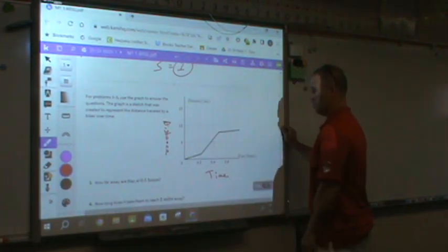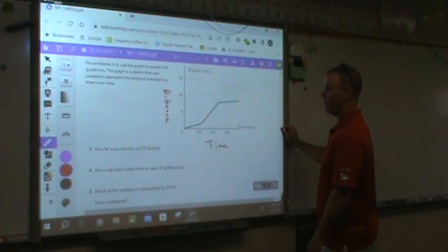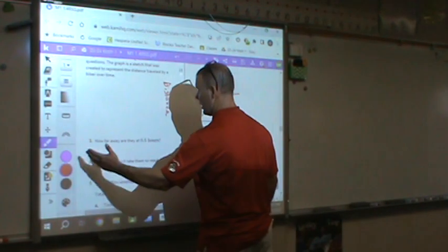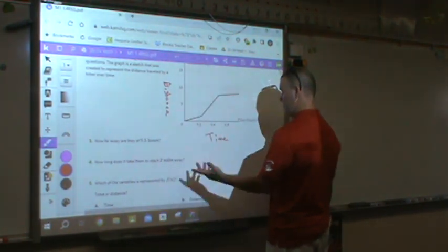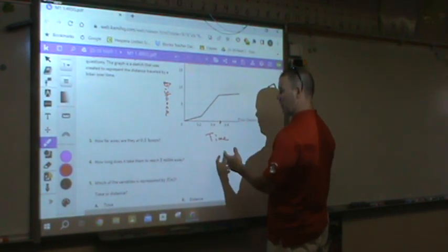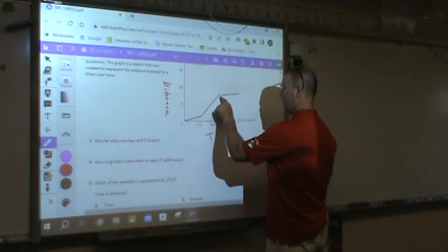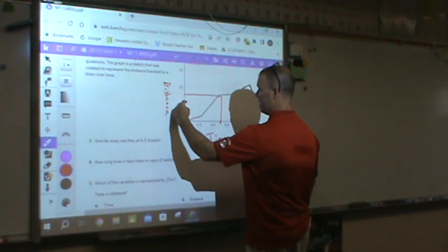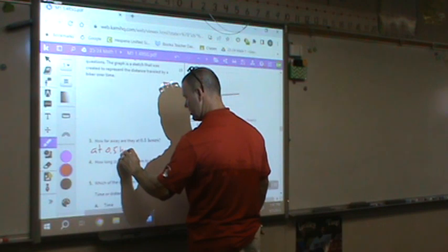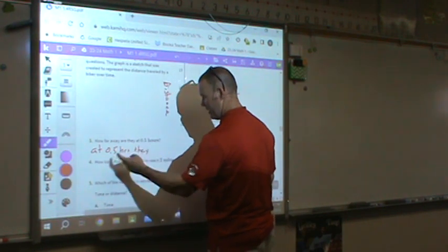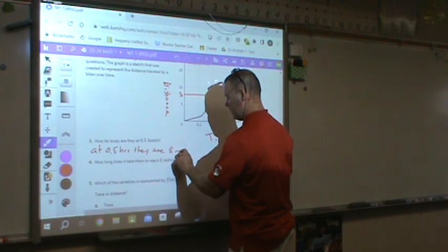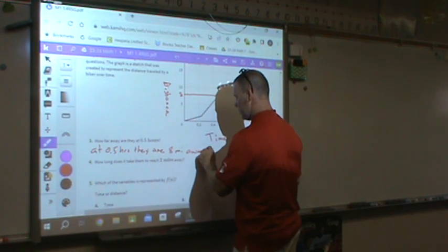So, this is going to be simple. How far away are they at 0.5 hours? Well, you have to think. I've got to go to 0.5. I don't see 0.5. Well, I see 0.2, 0.4, 0.6. 0.5 would be halfway in between. I think we could all agree on that. So, I'm going to go up. I'm going to go over. And I'm going to count. Not five, six, seven, eight. So, at 0.5 hours, they are eight miles away.